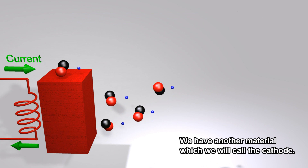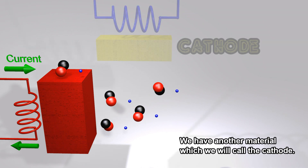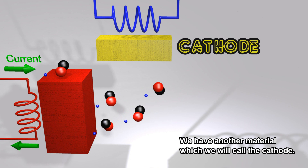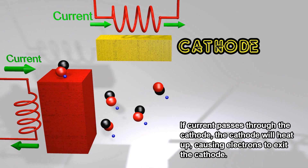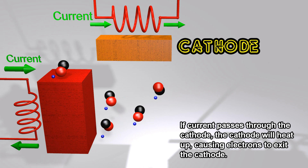We have another material, which we will call the cathode. If current passes through the cathode, the cathode will heat up, causing electrons to exit the cathode.